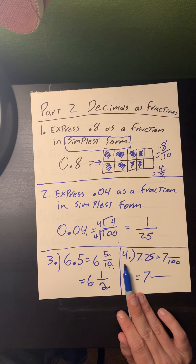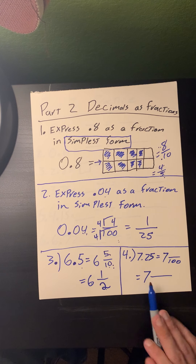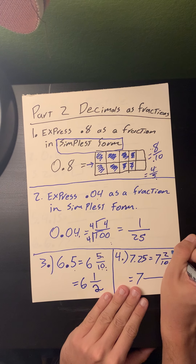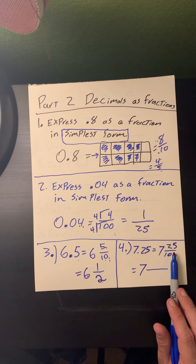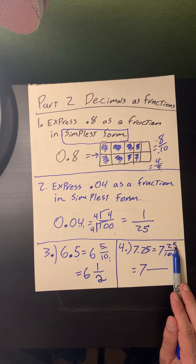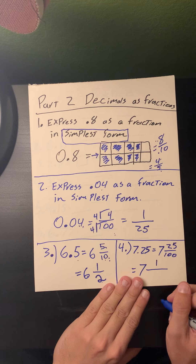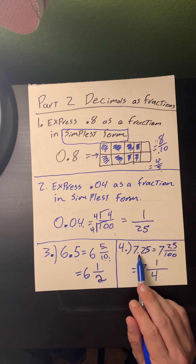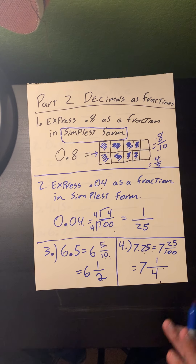Problem number four: converting 7.25 down to a mixed number. Seven point two five is equal to 7 and twenty-five hundredths. Twenty-five and one hundred can both be divided by 25. Twenty-five divided by 25 is 1, and 100 divided by 25 is 4. So 7.25 is equal to 7 and a quarter.